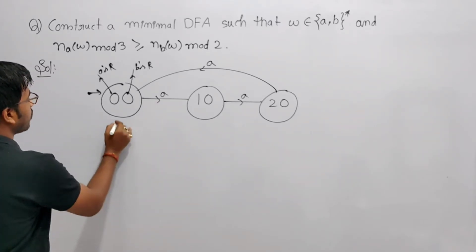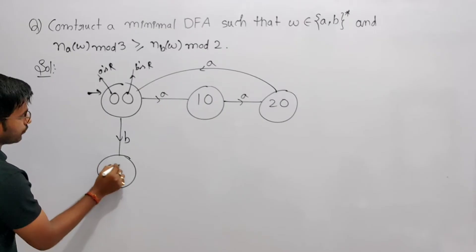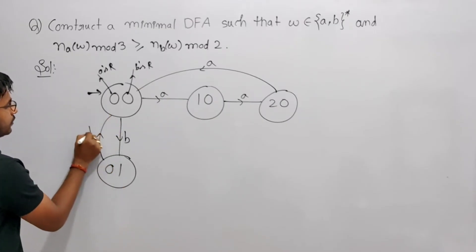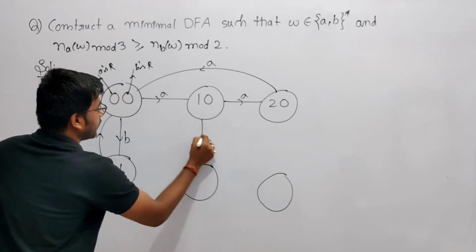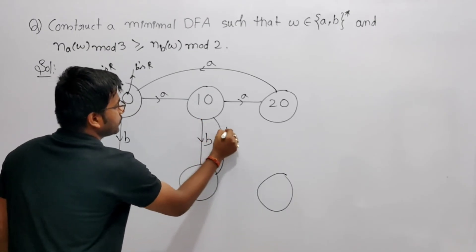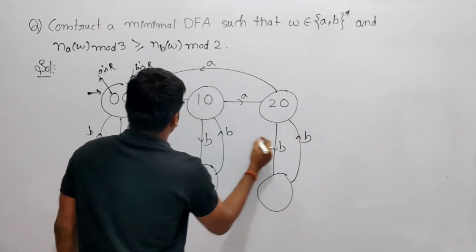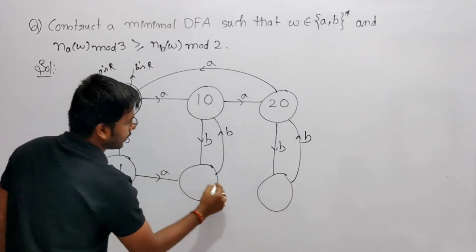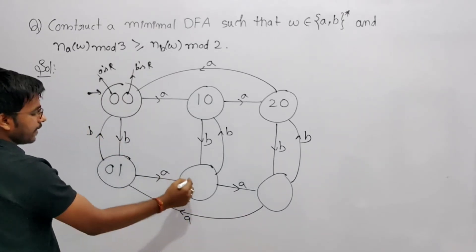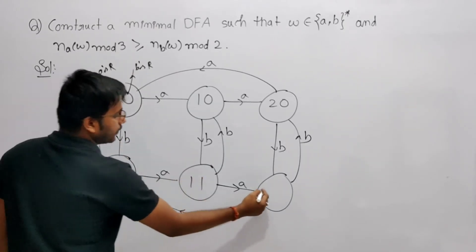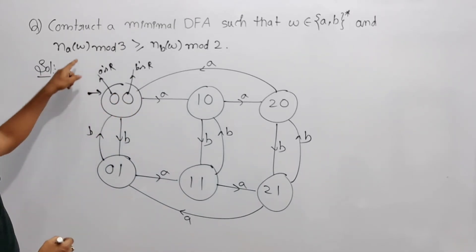Now I will count b's transitions vertically. Starting from (0,0), getting 'b' goes to (0,1), then back to (0,0). Similarly, copy and apply b transitions: (1,0) goes to (1,1) on b, (2,0) goes to (2,1) on b. Then a transitions: (1,1) goes to (2,1) on a, and (2,1) goes to (0,1) on a.